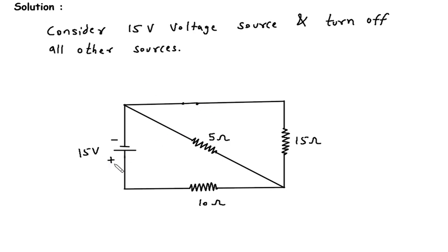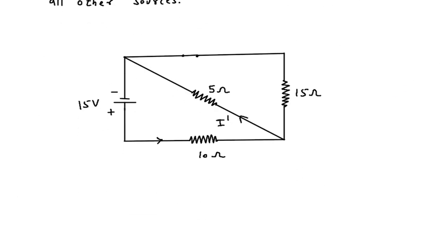Now according to the polarity of this voltage source, the current will flow in this direction. Let's say this is current I prime. Now we have to find this I prime using the current division rule.